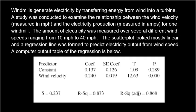So what do we learn from everything we just read? We're trying to predict electricity, so that becomes our Y, based on wind speed, which is our X. They also told us that our data came from wind speeds of 10 to 40 miles per hour, so trying to make any predictions above 40 or below 10 would be extrapolation and is not recommended. Anything between 10 and 40 would be good to use with our regression.